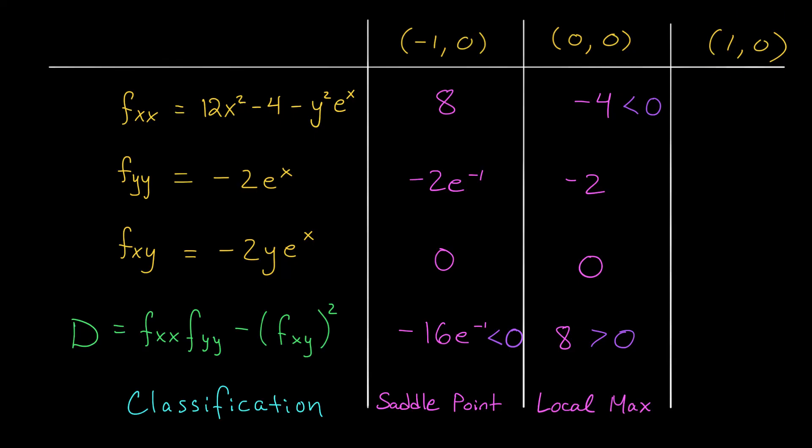Finally, we check the point 1, 0. By plugging it into fxx, I get a value of 8. By plugging into fyy, I get minus 2 e to the 1. And by plugging into fxy, I get 0. Well, again, we compute the value of this d quantity. We get 8 times minus 2 e minus 0 squared. That's minus 16 e. It's negative. If d is negative, it means we have a saddle point. So two saddle points and a local max.